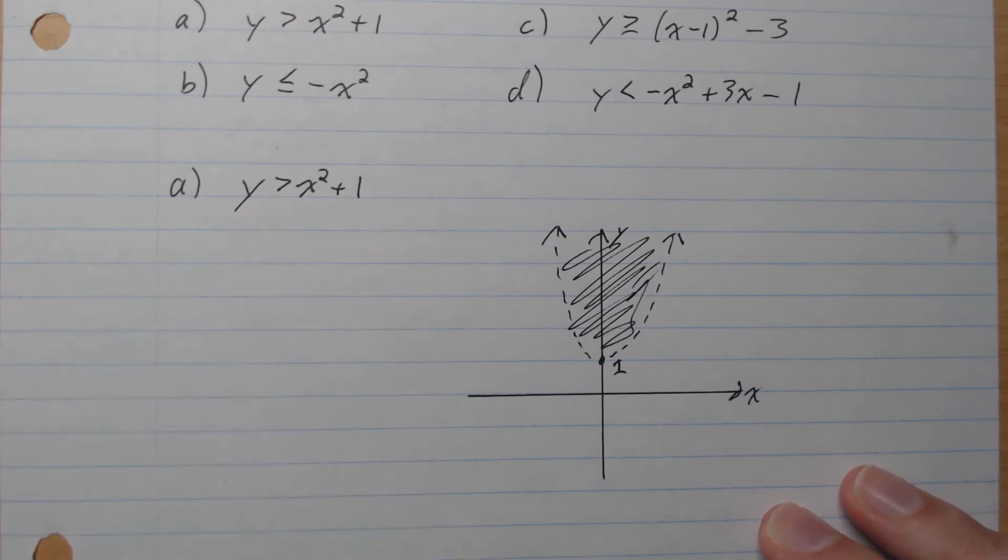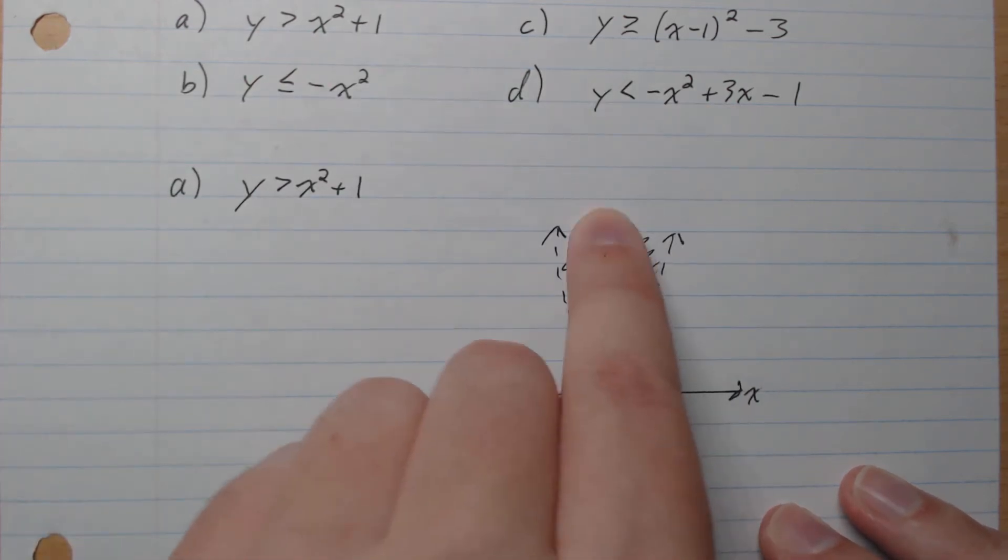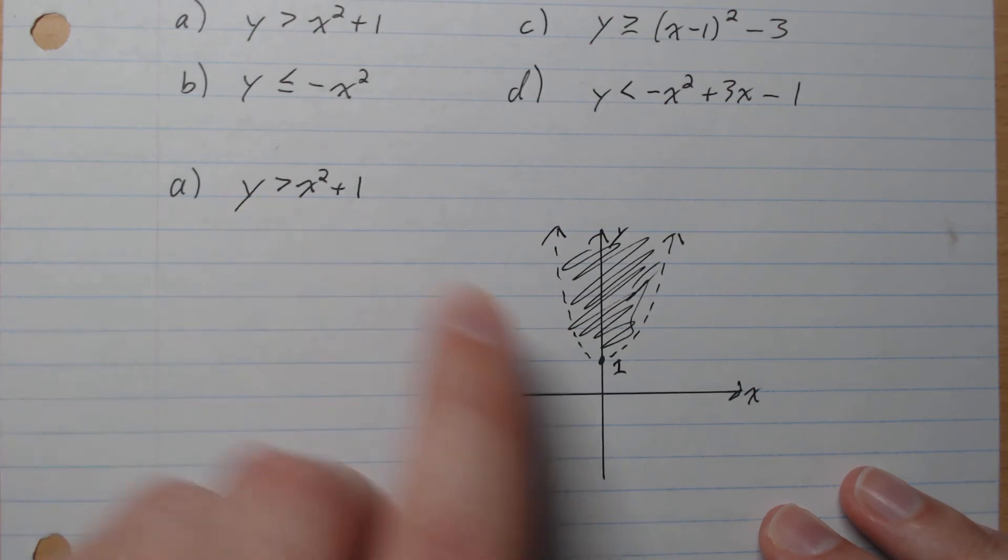So A, y is greater than x squared plus 1. So we have our x squared plus 1 here. Greater than, so it's above, so that's this area here. It's dashed because it's not allowed to be equal. And so there's the graph of the inequality.